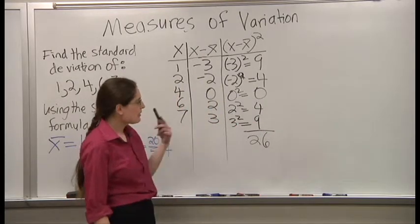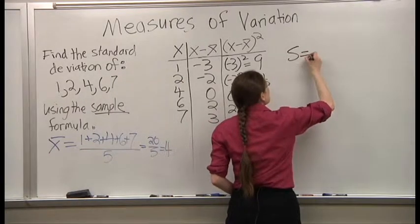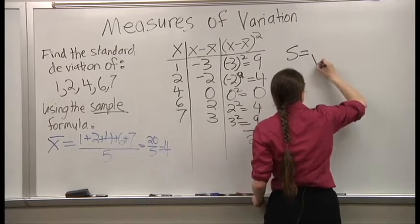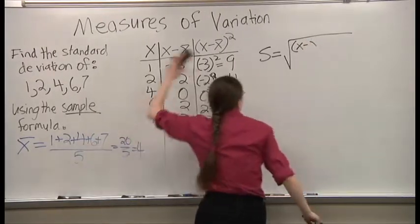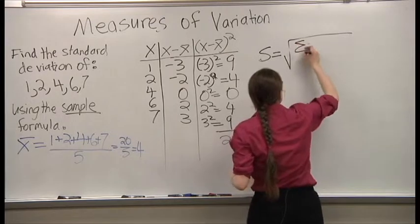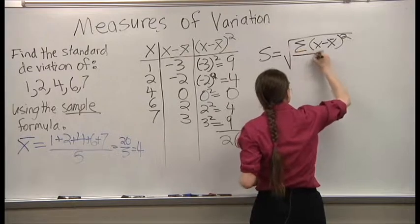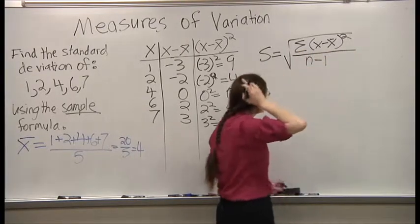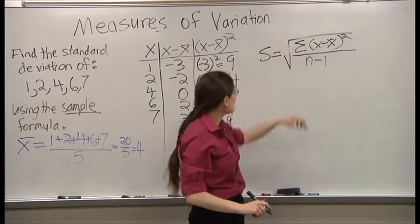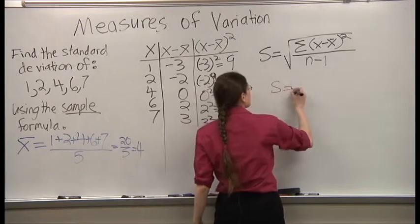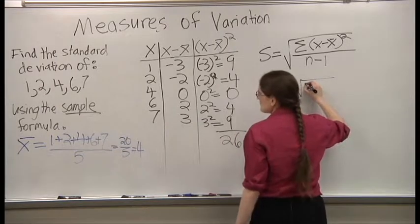So next we take the formula. I'm missing a Greek letter. We divide by n minus 1. What's n? The number of values, which is 5.